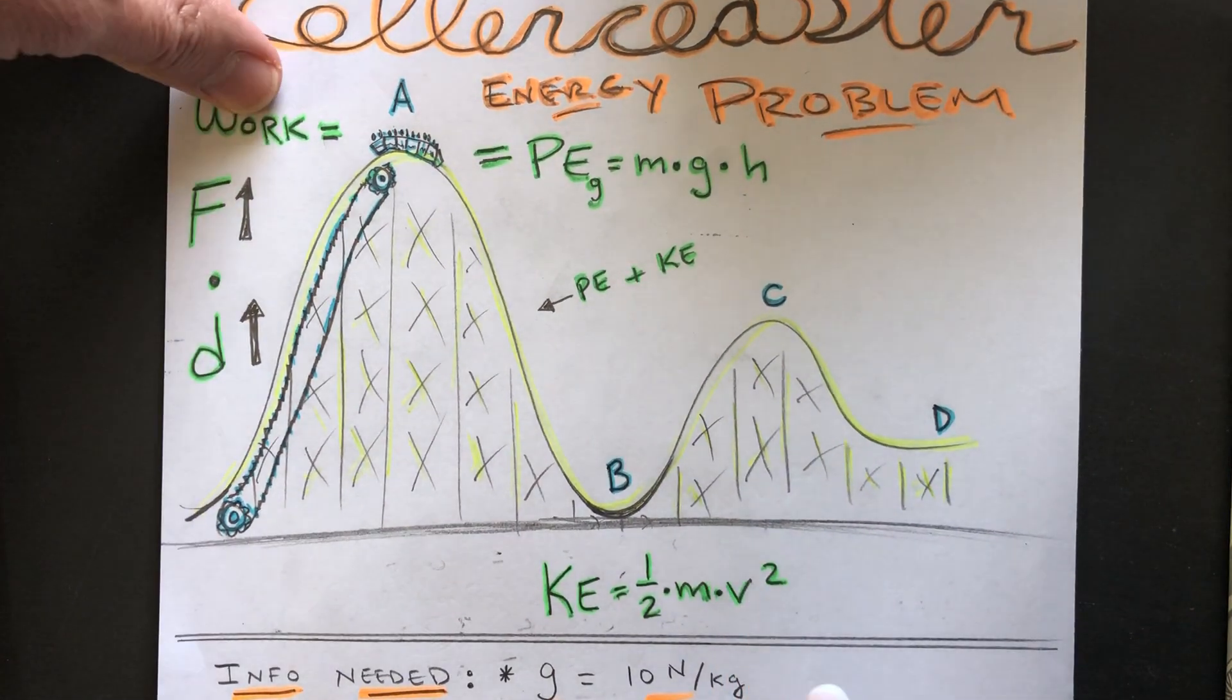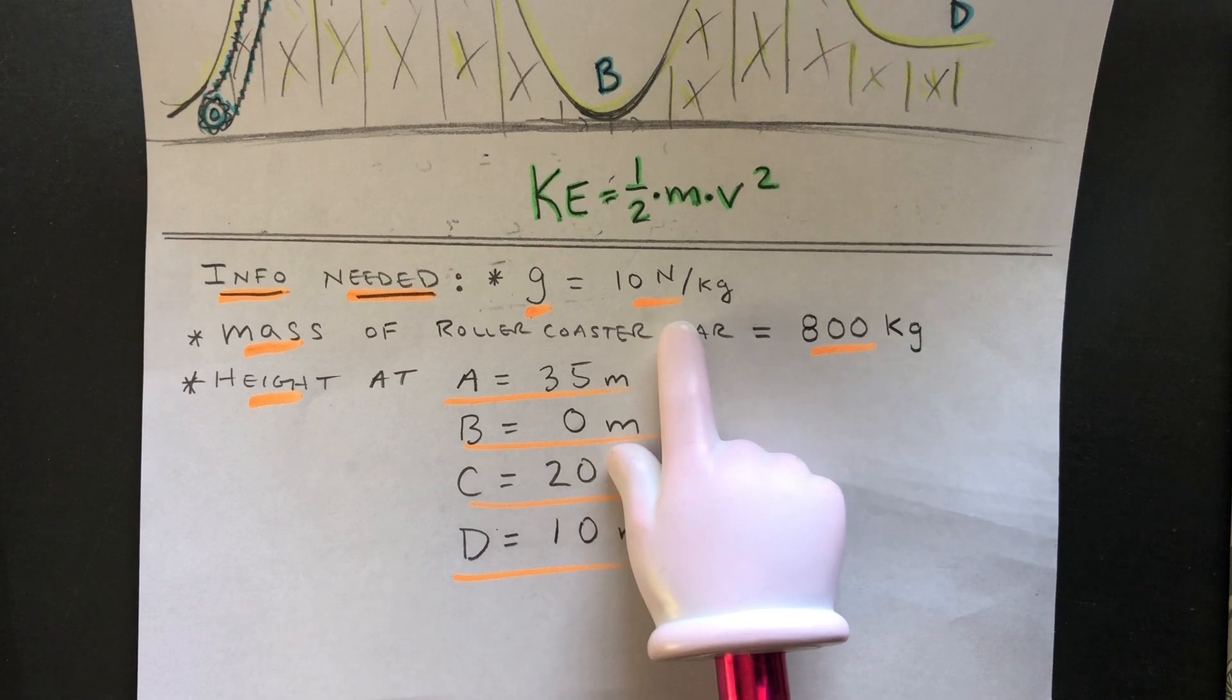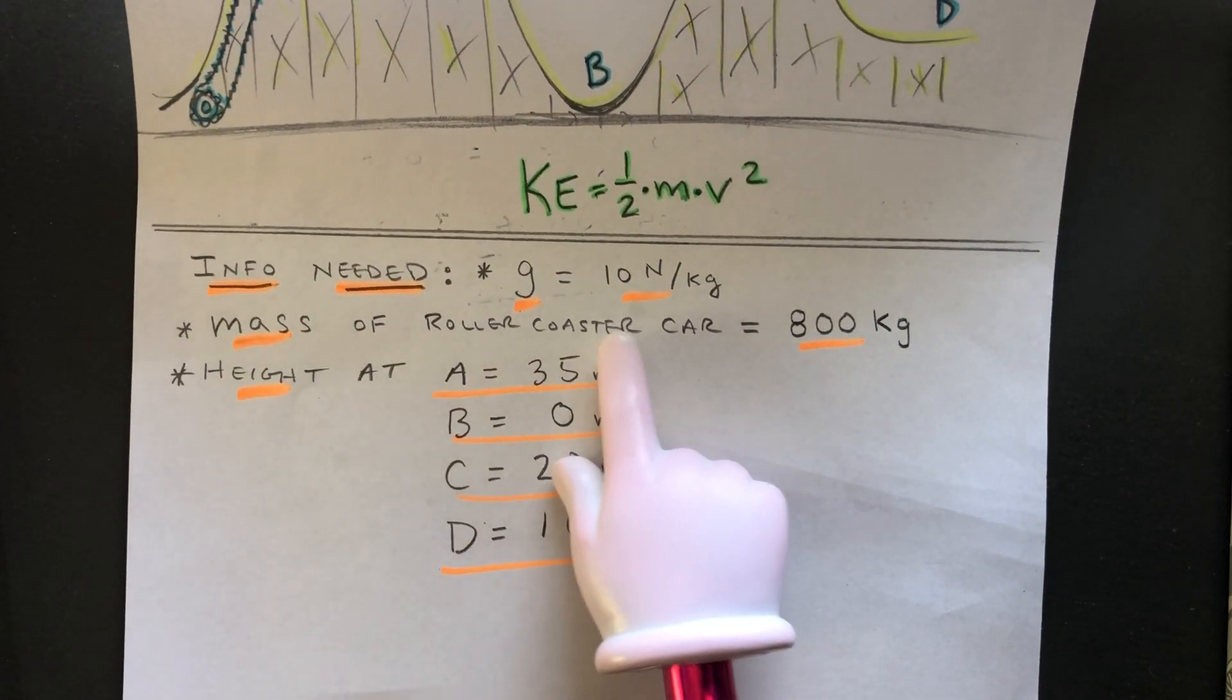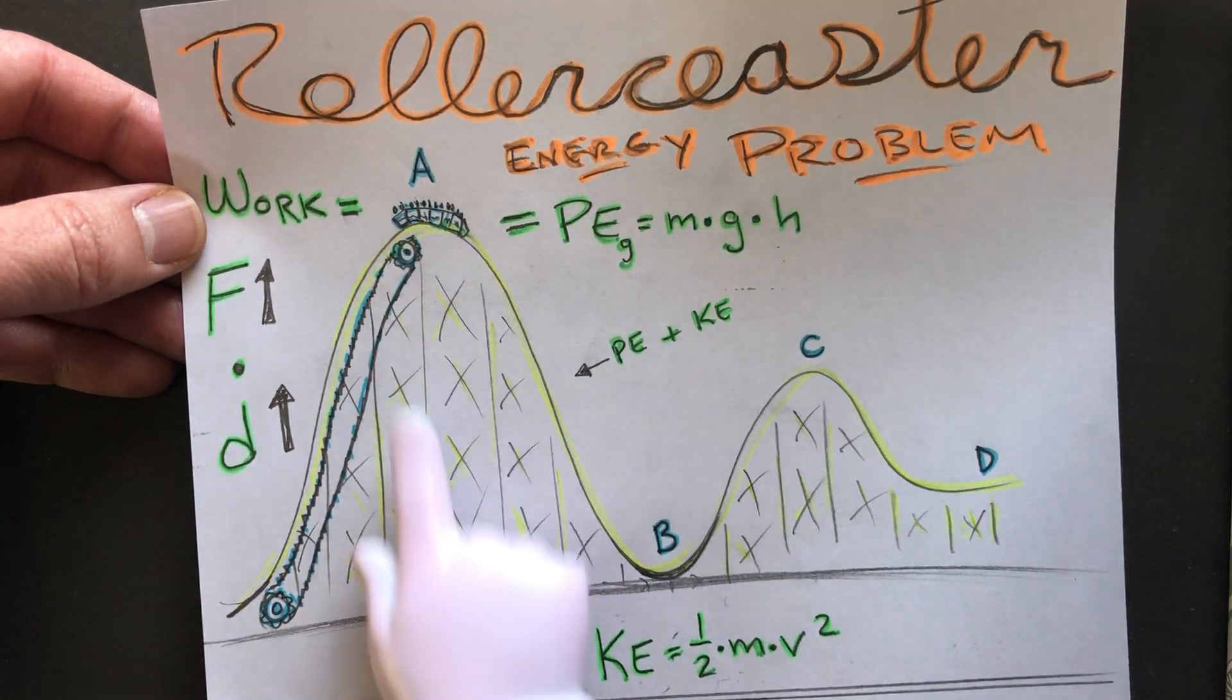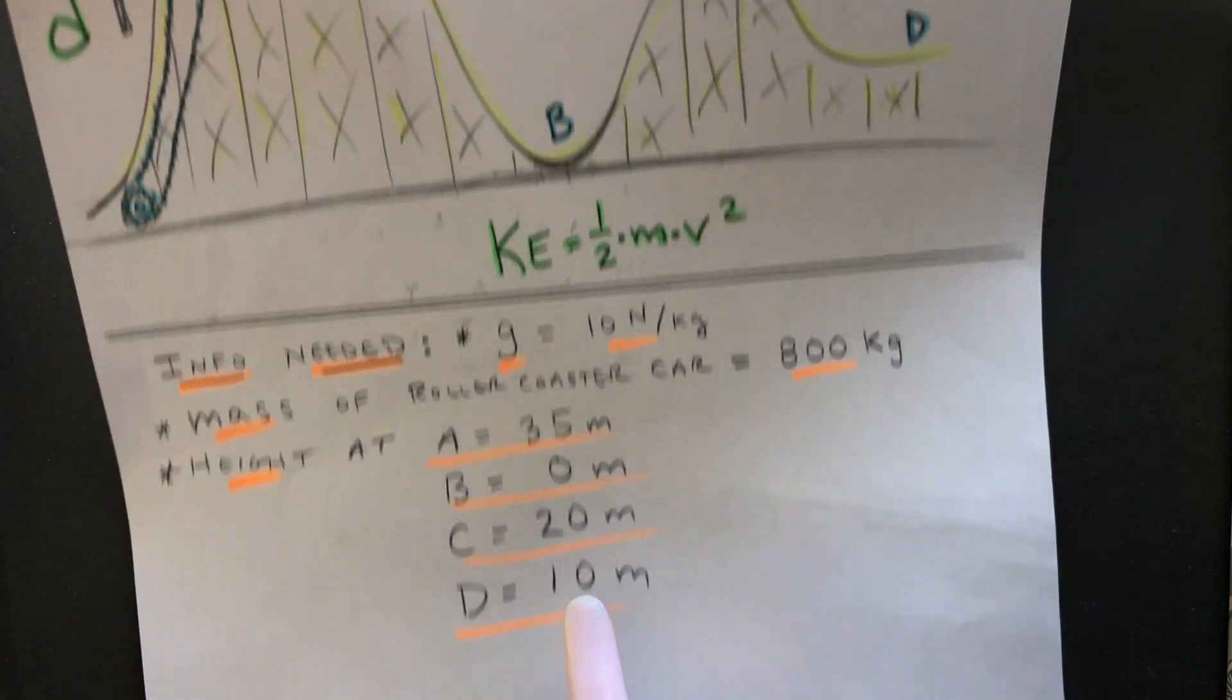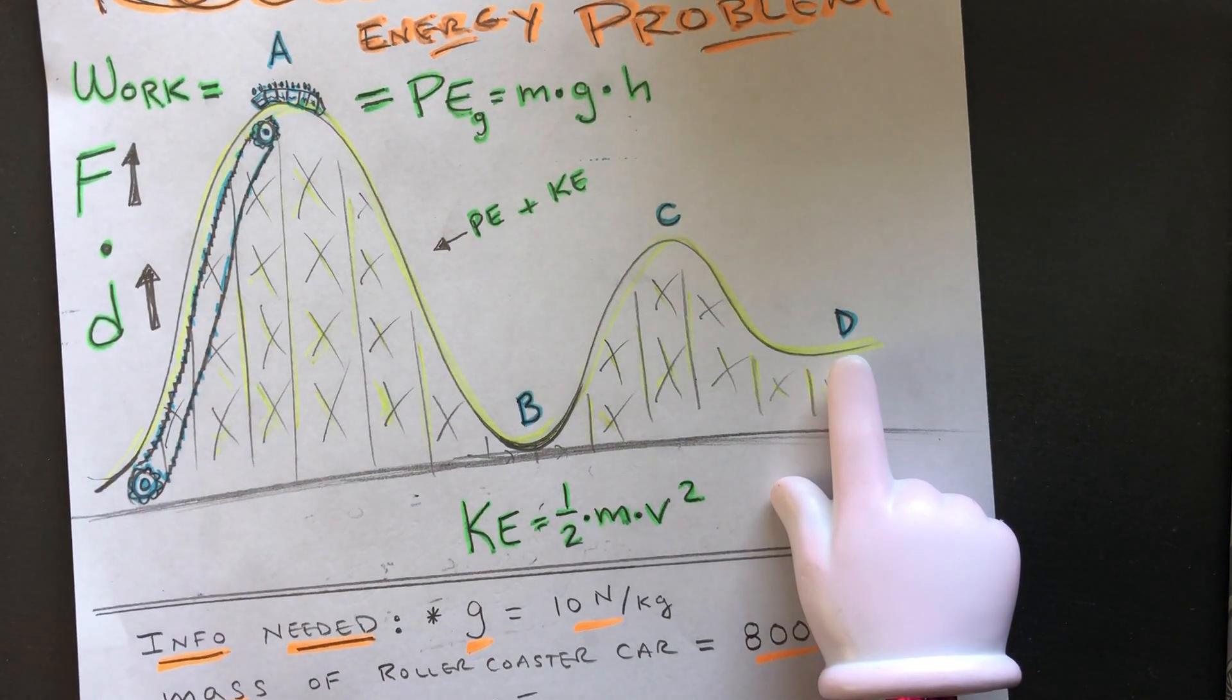So to do a problem like this, the first thing is you would need some additional information here. Things like gravity is 10 newtons per kilogram in this problem. Let's say that the mass of the roller coaster car was 800 kilograms and then the height at A is 35 meters high, B is zero meters high, C is 20 meters high, and D is 10 meters high. We're not going to use D in the problem I'm going to show you.